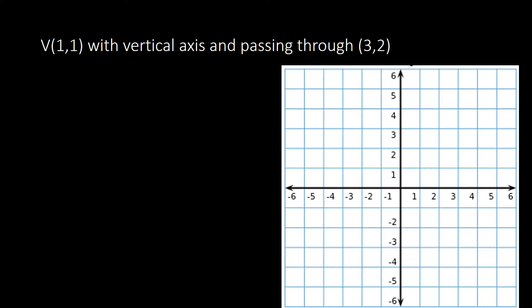Plotting our vertex at (1, 1) — X is 1 and Y is 1. This is a vertical axis, so the axis of symmetry passes through the vertex. Plotting our point (3, 2): X is 3 and Y is 2. Looking at the graph, the vertex is here and the point on the parabola is here, so the parabola opens upward.